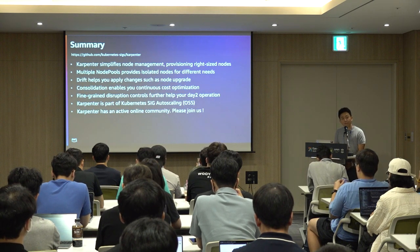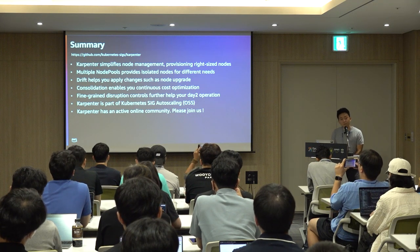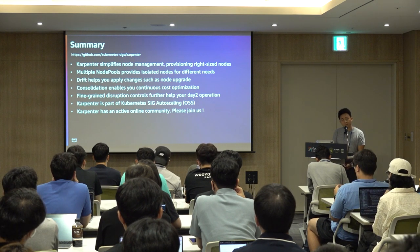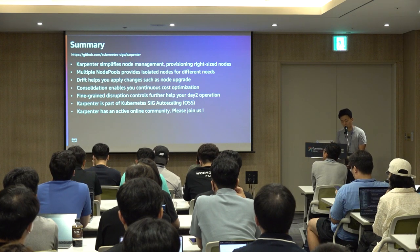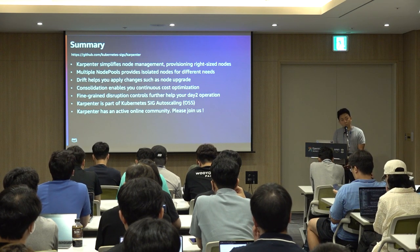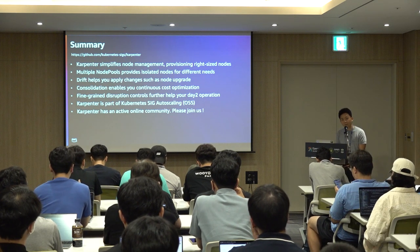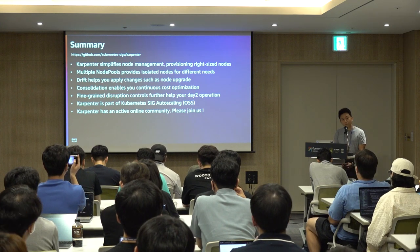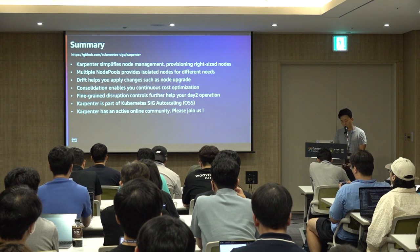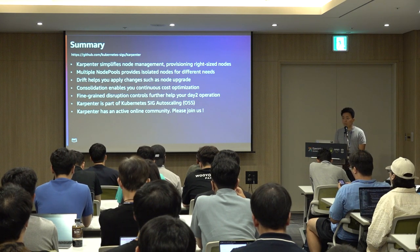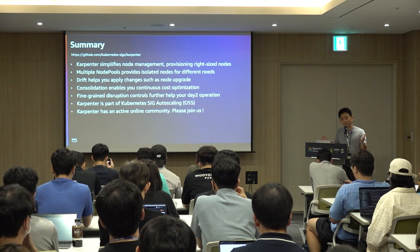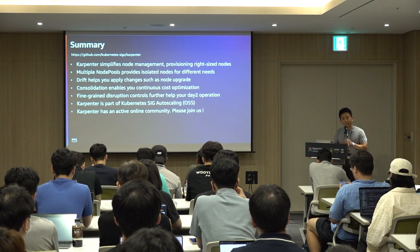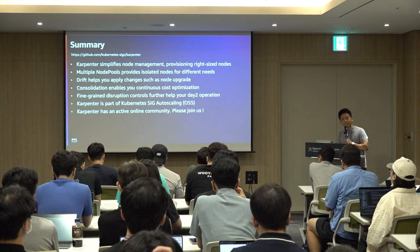In summary, Karpenter simplifies node management — it not only automatically scales your data plane but helps with consolidation, drift for upgrades, and disruption controls for node operations. You can have multiple node pools for multi-tenant node-level isolation. It's open source with an active community on Slack and GitHub. Thank you for listening to my session.